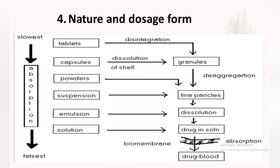Absorption of a drug also depends on the nature of the dosage form. As seen in the picture, a tablet must first disintegrate and dissolve in gastric fluid before entering systemic circulation, but a solution bypasses the disintegration and dissolution steps entirely. The order of absorption speed is: tablet → capsule → powder → suspension → emulsion → solution, with solution being the fastest absorbing dosage form through the GIT.